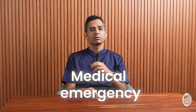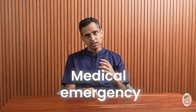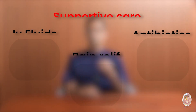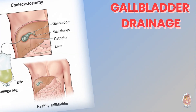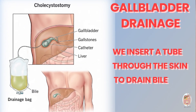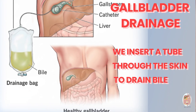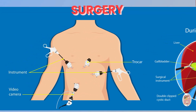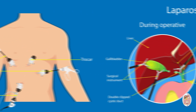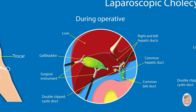Acalculous cholecystitis is a medical emergency requiring quick and careful treatment. Management includes supportive care with IV fluids, pain relief, and antibiotics. For unstable patients, we insert a tube through the skin into the gallbladder to drain the bile. Once the patient is stable, gallbladder removal is the definitive treatment — though in some cases surgery may be done right away if the patient can handle it.